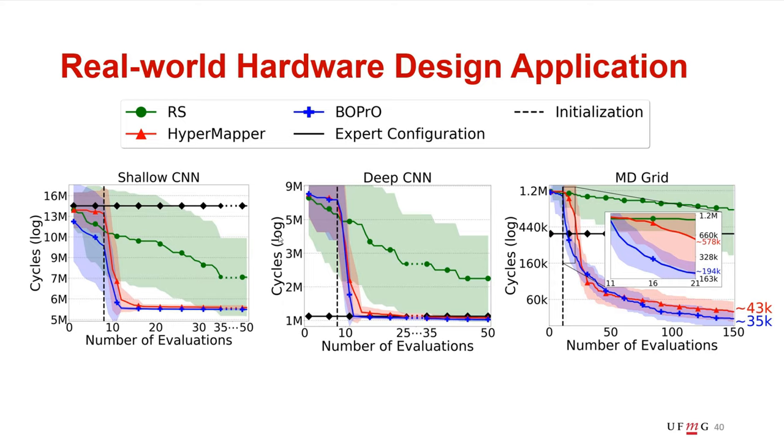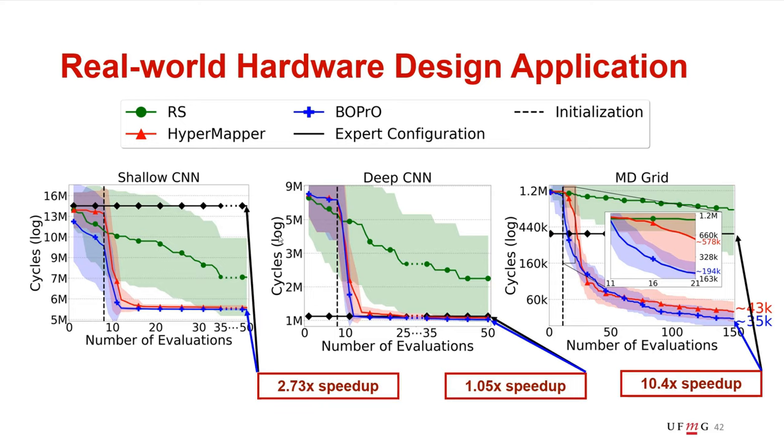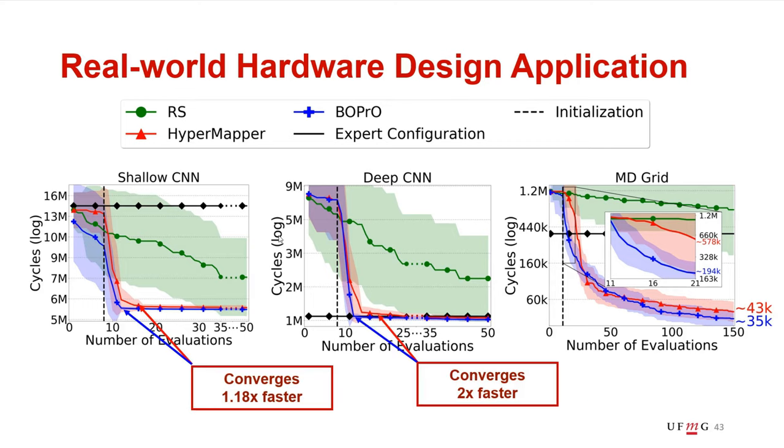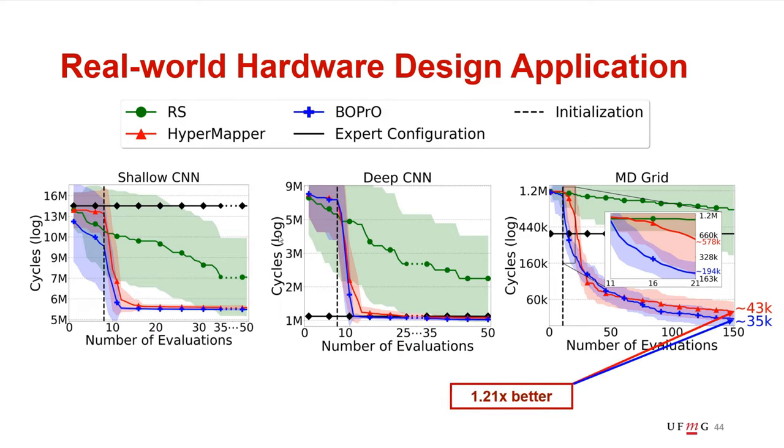We compare BOPrO with the expert prior to the expert himself, and to random sampling and the state-of-the-art Bayesian optimization for these benchmarks, which is called HyperMapper. And basically, we see that BOPrO is able to once again outperform random sampling. BOPrO can leverage the expert prior and outperform the expert himself in all of the benchmarks. And compared to standard Bayesian optimization, BOPrO once again converges faster in the two smallest benchmarks, up to two times faster, and finds a better result overall in the third, more difficult benchmark.